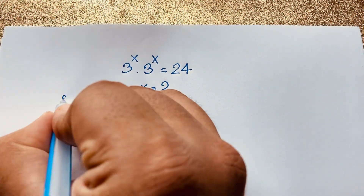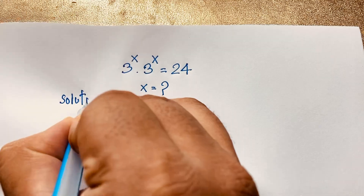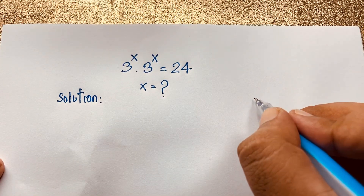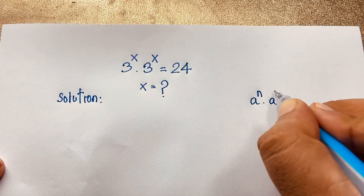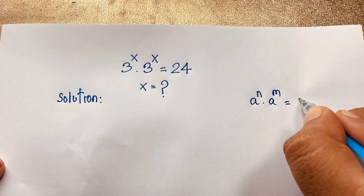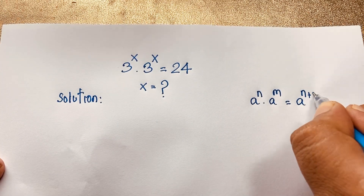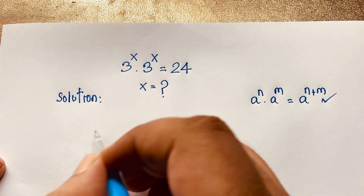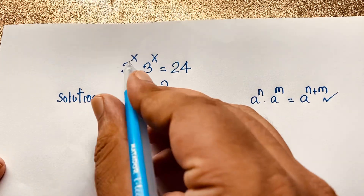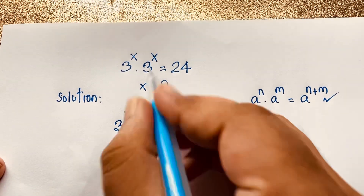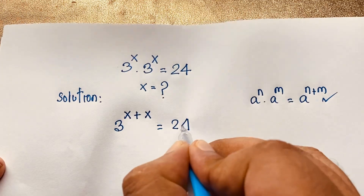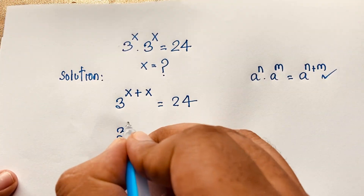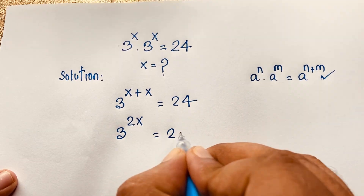So our math solution. We know that the exponential formula: a to the power n times a to the power m equals a to the power n plus m. Now I apply this formula here. So it will be 3 to the power x plus x is equal to 24. Now here, 3 to the power x plus x, it will be 3 to the power 2x is equal to 24.